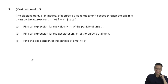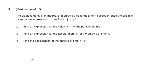The question is about differentiation. The displacement s in meters of a particle t seconds after passing through the origin is given by an expression. Part a: find the expression for velocity v at time t. Part b: find the expression for acceleration. Part c: find the acceleration of the particle. The key idea is differentiation — given the displacement function, we need to find velocity and acceleration.